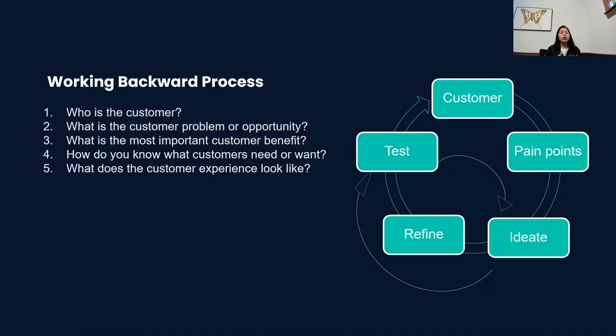And then you continue to refine which idea would work, which would not work. You will continue to go back to your customer, validate your approach. In the working backward process, the aim is to be able to answer these five questions: Who is the customer? What is the customer problem you want to solve? What is the benefit when you solve this customer problem? Is your customer in real need of it? Do you know that your customer wants this? And if you are able to answer all first four questions, then you would also be able to define what the experience would look like, what would be the customer journey?